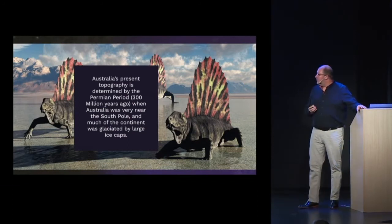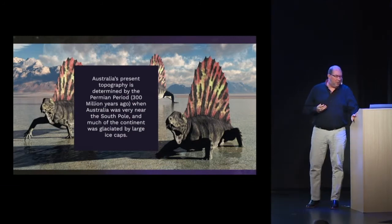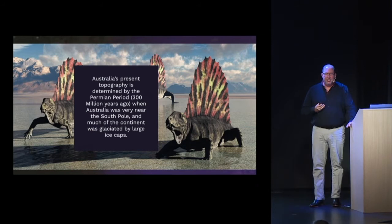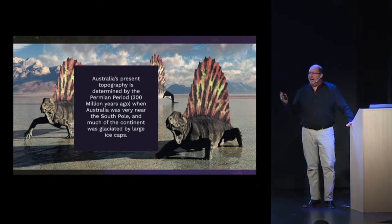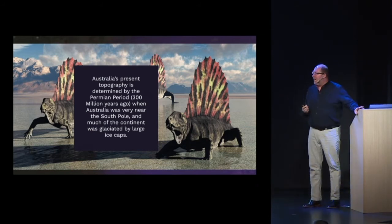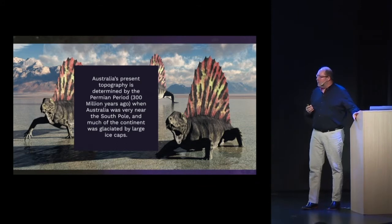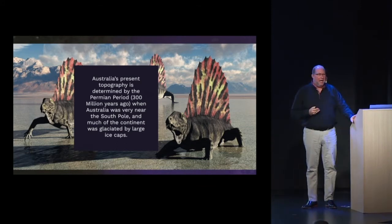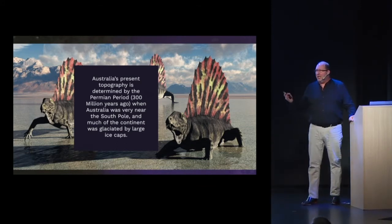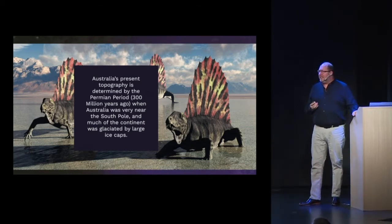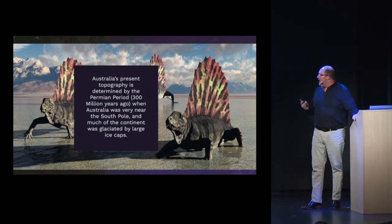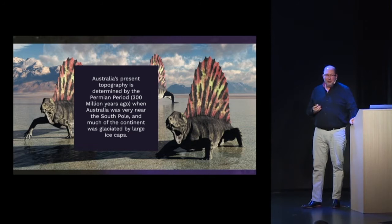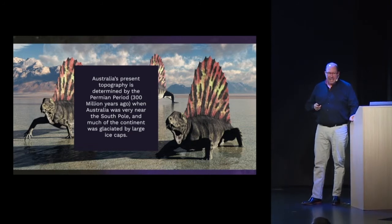Australia's present topography was determined by the Permian period about 300 million years ago, when Australia was very near the South Pole and much of the continent was glaciated by large ice caps. So what you're going to see as this incredibly dry, hot continent was at one time located at the South Pole and was covered in ice.